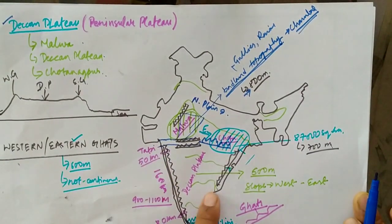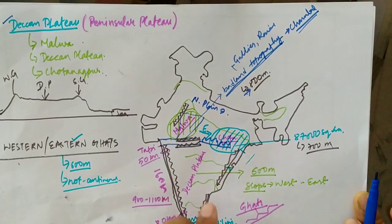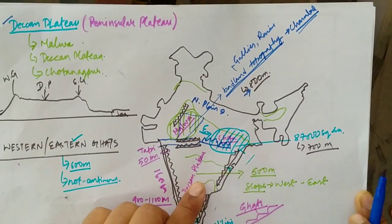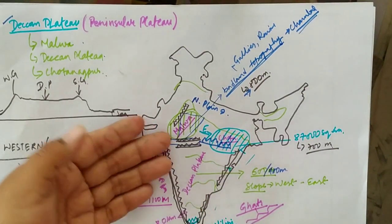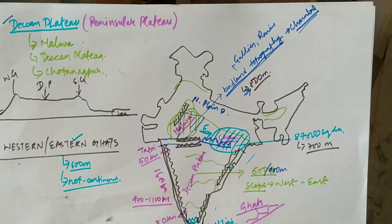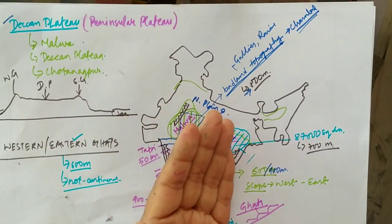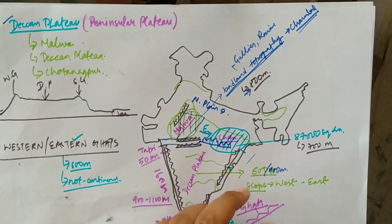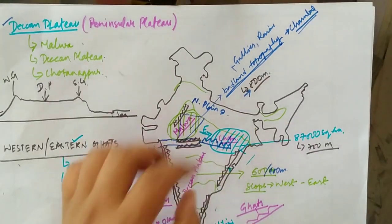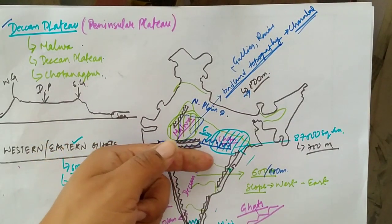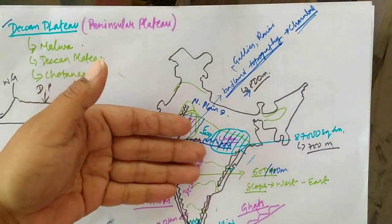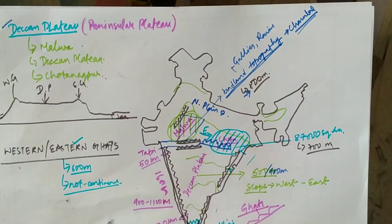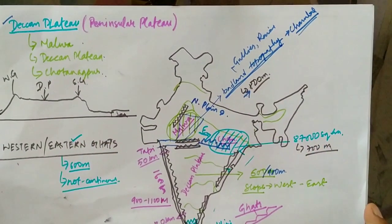The Deccan Plateau is bounded by hills on both sides — the Western Ghats and Eastern Ghats. The average height of the Deccan Plateau is 600 to 900 meters. The slope of the Deccan Plateau is from west to east, which is the reason most rivers — like the Mahanadi, Krishna, and Kaveri — flow towards the eastern side and drain into the Bay of Bengal.